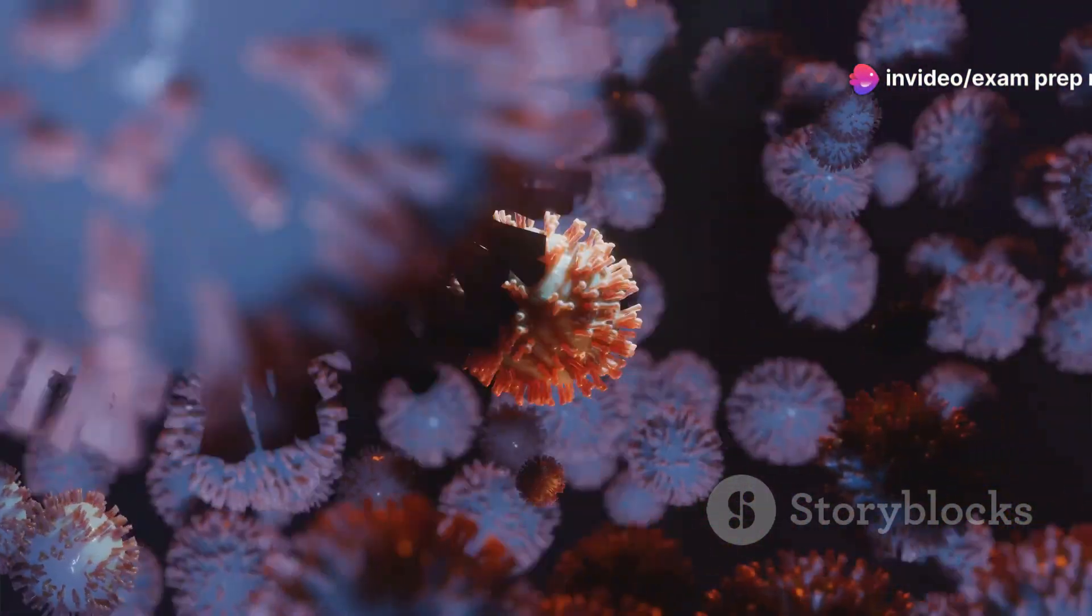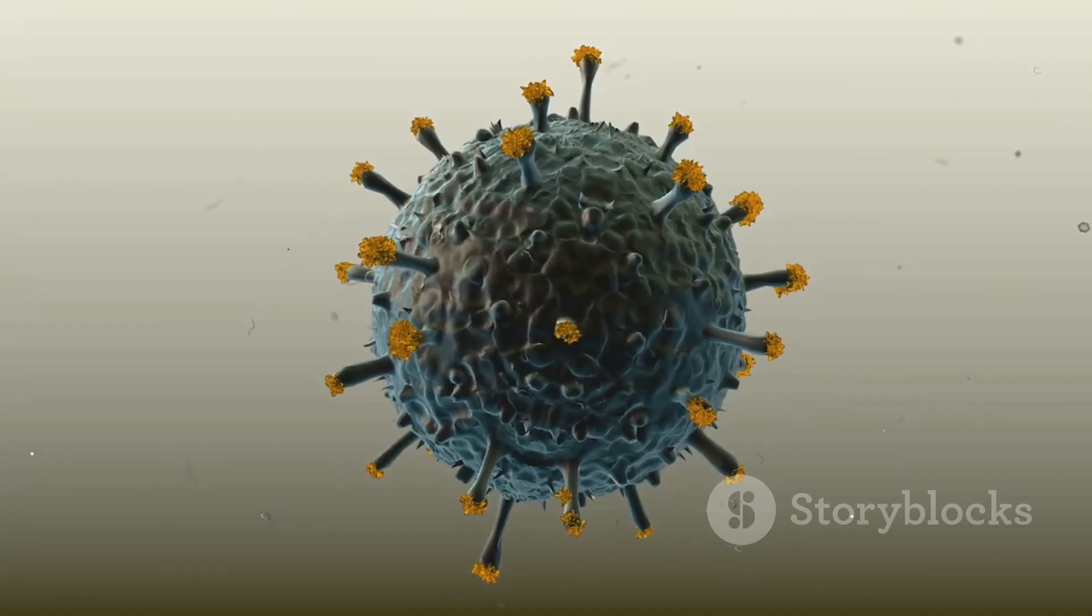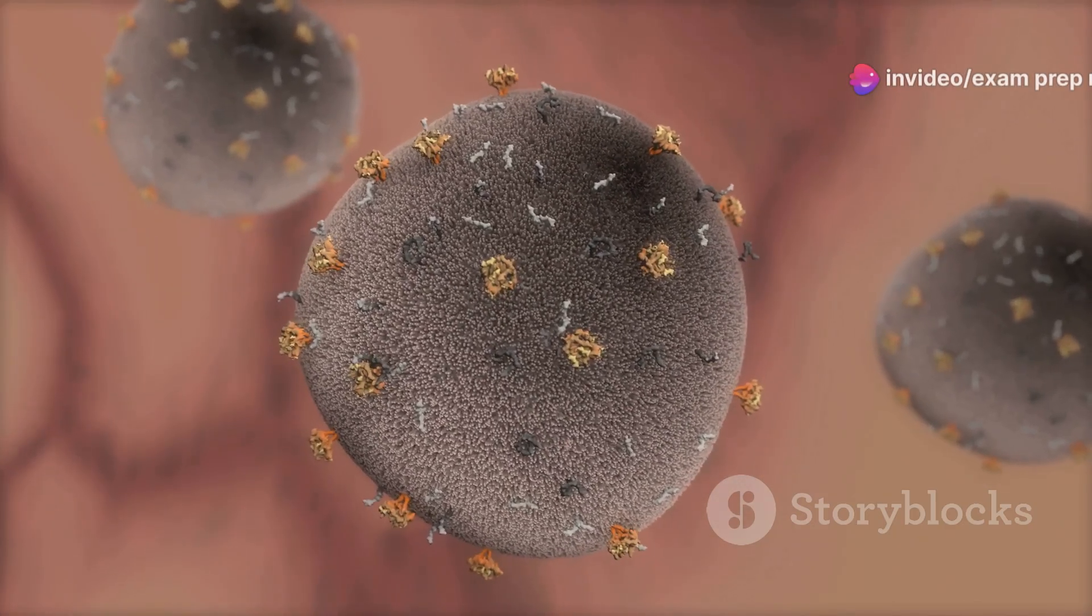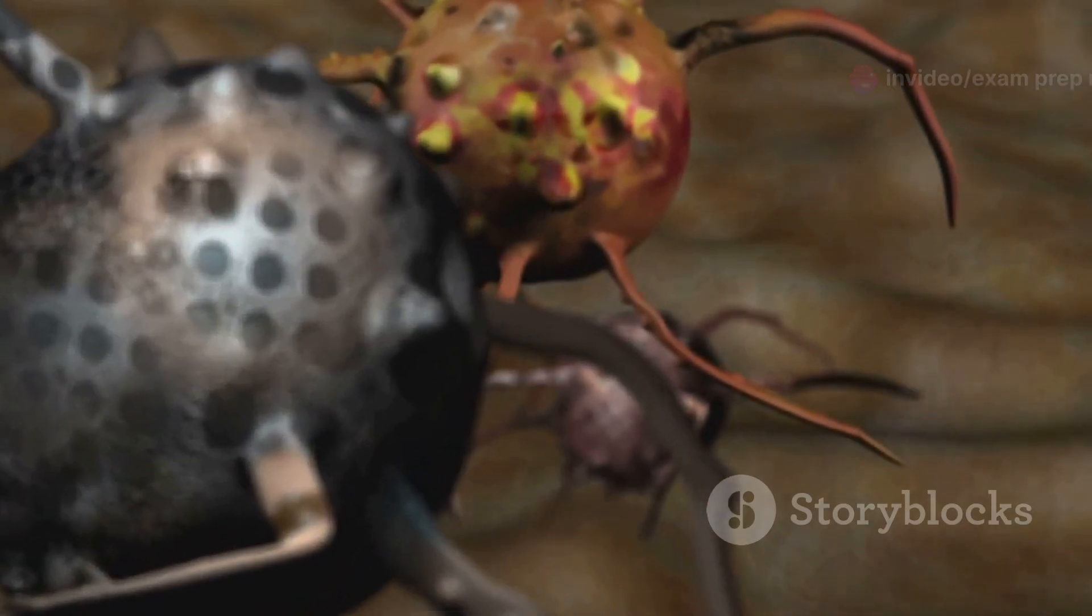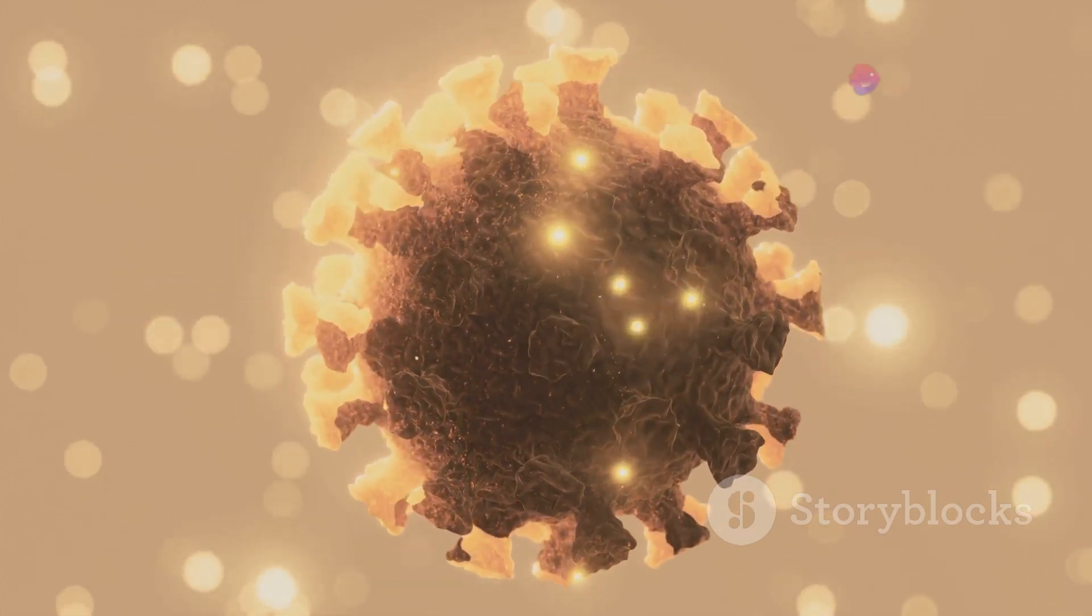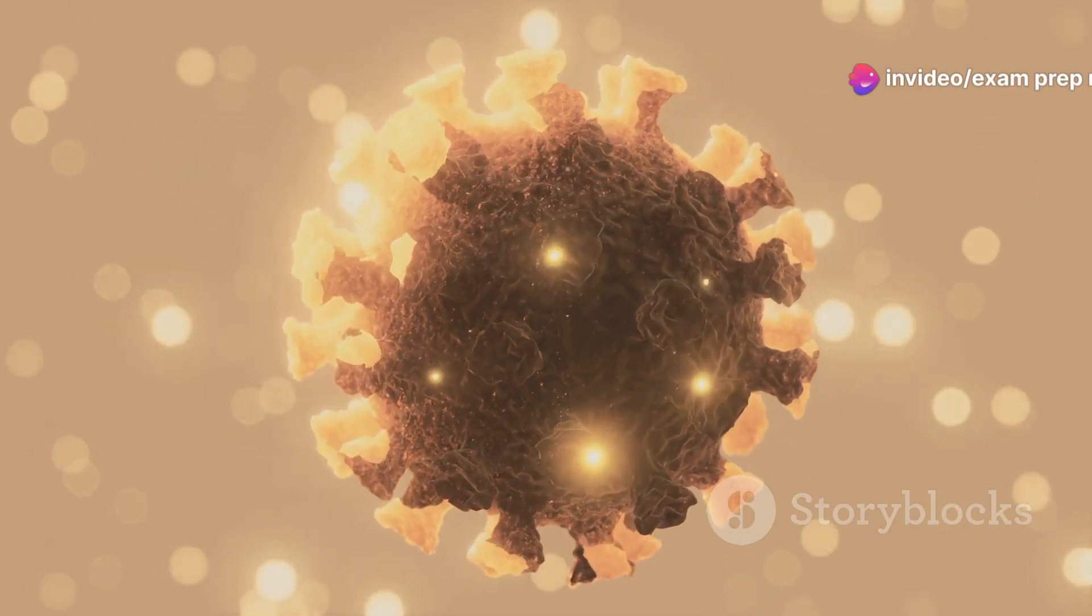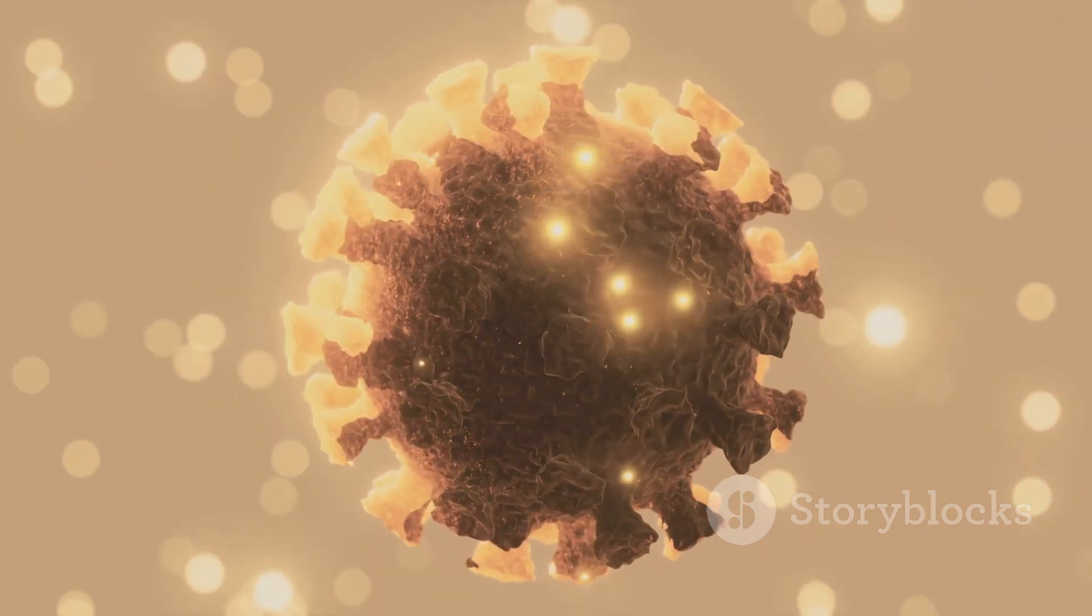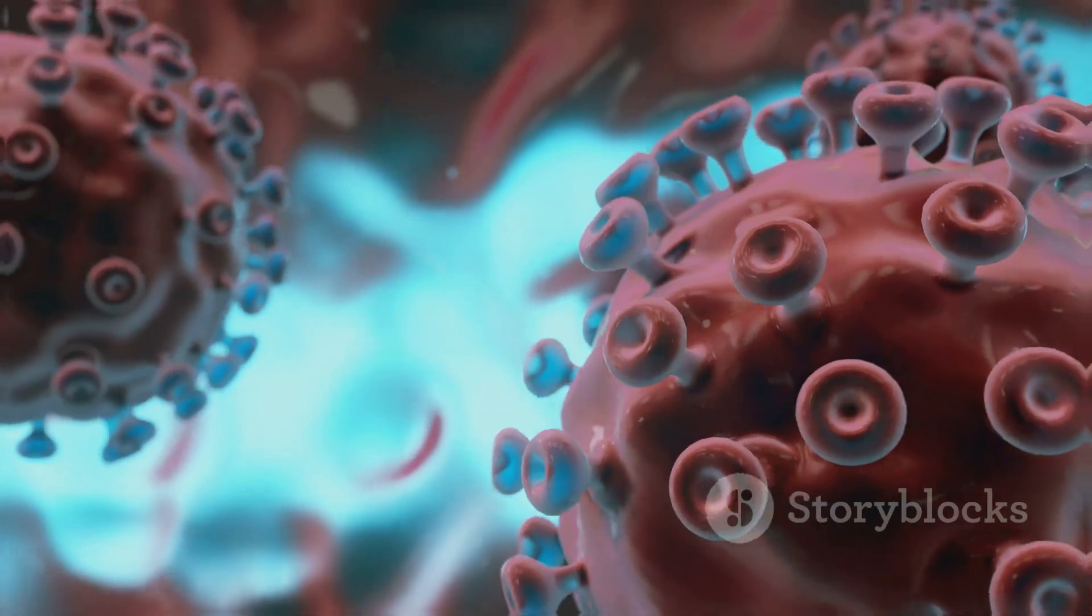Viruses, viroids and prions, though vastly different in their structure and mechanisms of action, share the ability to cause significant disease and impact life on Earth. These infectious agents highlight the constant interplay between hosts and pathogens and the ongoing battle to maintain health in a world teeming with microscopic threats. Understanding the unique characteristics of each of these agents is crucial for developing effective strategies to diagnose, treat and prevent the diseases they cause. As technology advances, we continue to gain a deeper understanding of these fascinating and often formidable entities, paving the way for new and innovative approaches to safeguarding human, animal and plant health in the future.